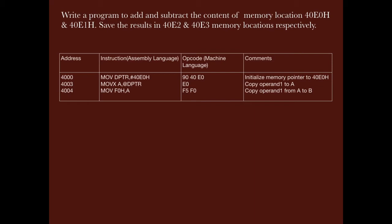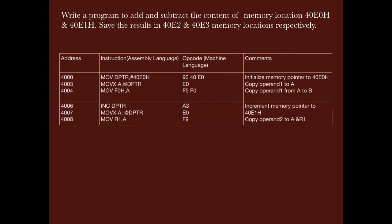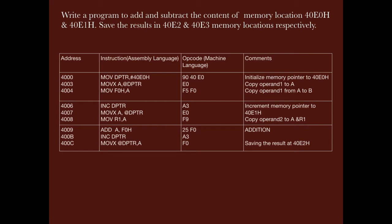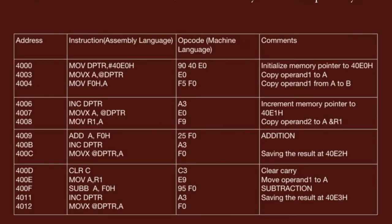Then we move the content of 40E0H to the accumulator — that is the first operand, which is also saved in register B whose RAM address is F0H. Now we increment DPTR and move the content of 40E1H into the accumulator — that is the second operand moved into A. The second operand is also saved in register R1. Now we add the contents of A with F0H (register B), increment DPTR, and save the result of the addition in 40E2H.